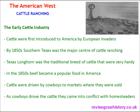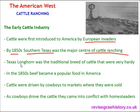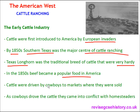Before we start, a bit of background information on the early cattle industry. Cattle were first introduced to America by European invaders, and by the 1850s southern Texas was the major centre of cattle ranching. The traditional breed of cattle was the Texas Longhorn, which was particularly hardy — they could withstand the extreme climate typical of the Great Plains. In the 1850s beef became a popular food in America and cattle were driven by cowboys to markets where they were sold.